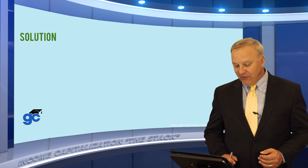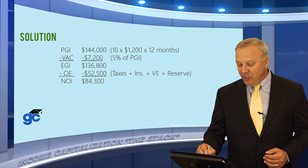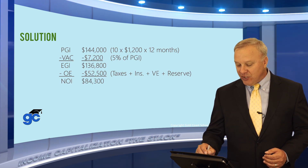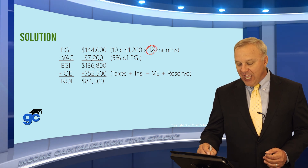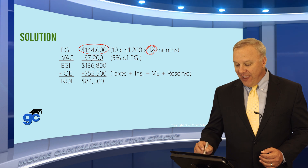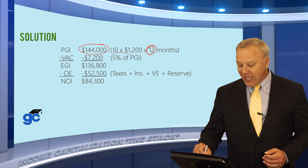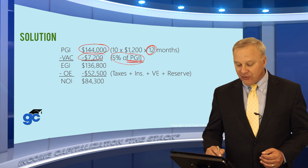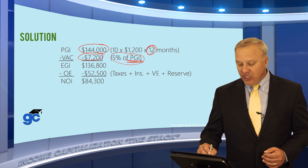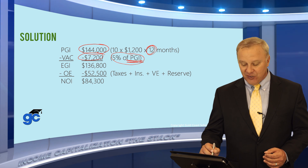Let's do the math. PGI is 10 units times $1,200 per month times 12 months — don't forget the 12 months because this is annualized — giving a PGI of $144,000. Vacancy and collection losses are 5% of PGI, which is $7,200. Subtract and you find the EGI, or effective gross income, is $136,800.